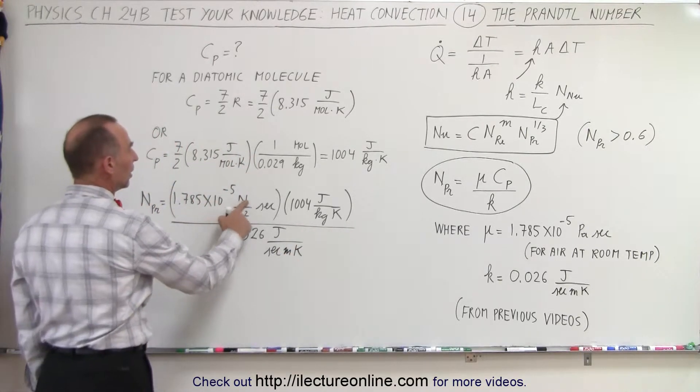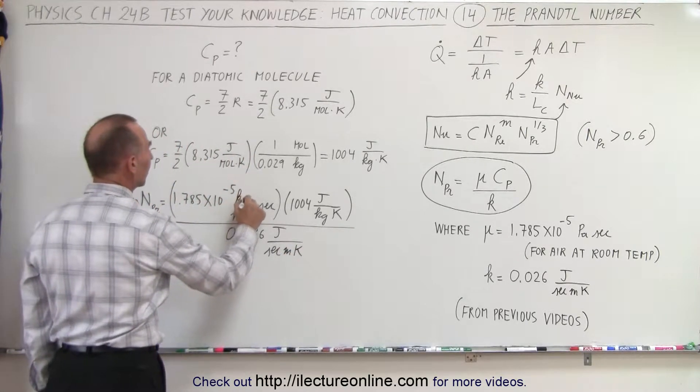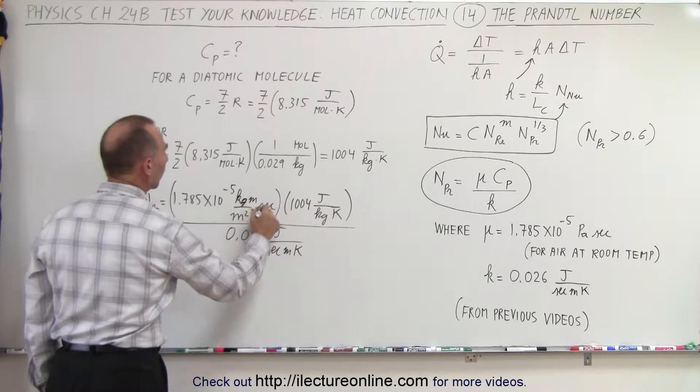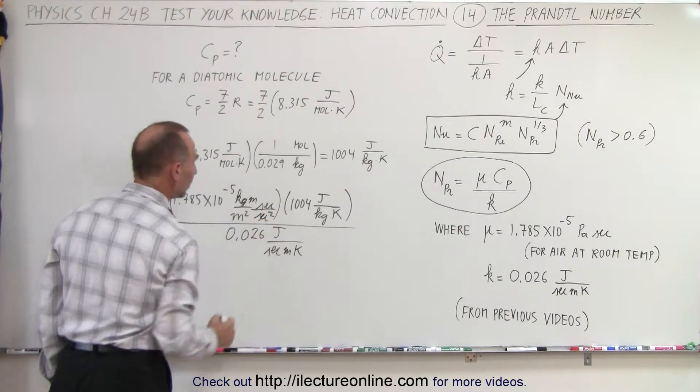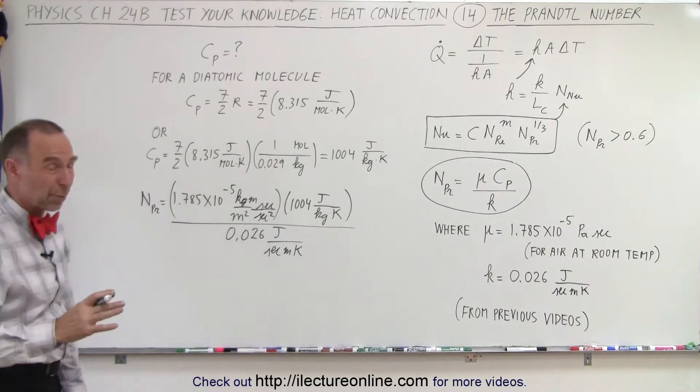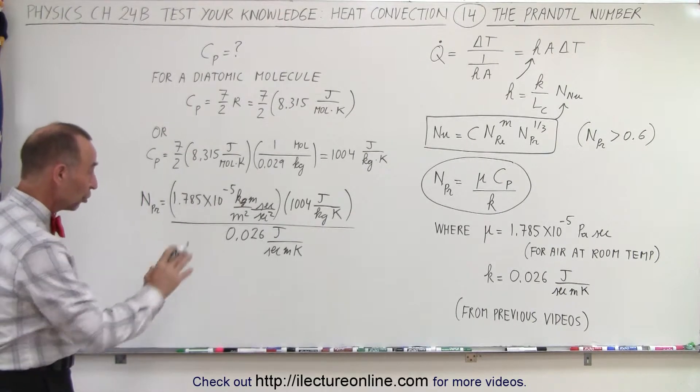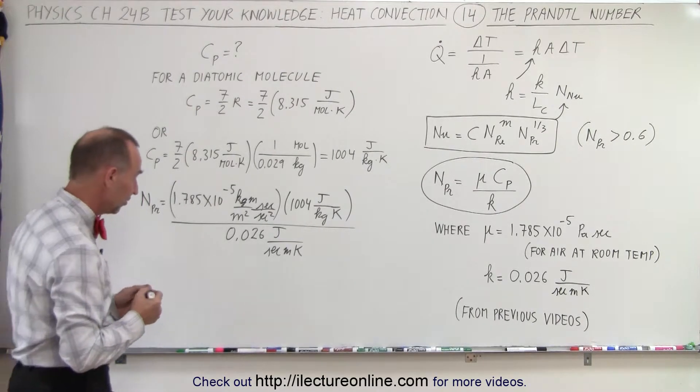Now notice that a newton can be written as a kilogram meter per second squared. And notice when we multiply all that out the units should completely cancel. So let's see if they do.